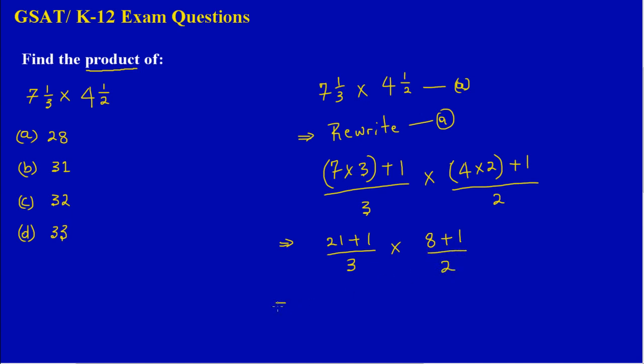Let's simplify that quickly. I'm saying 21 plus 1 will give me 22 over 3, and I'm multiplying that by 8 plus 1, which gives me 9 over 2. So I can simplify this now.